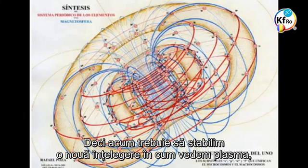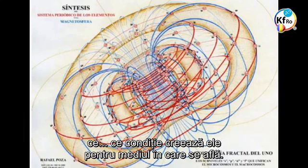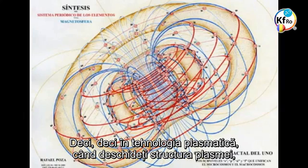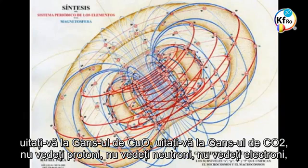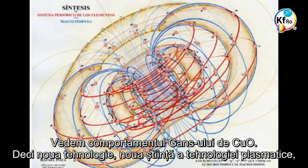Now we have to establish a new understanding of how we see a plasma, which is all about the same shape and size in respect to what they are, what they perform, what they indicate, what condition they create for the environment they are in. In plasma technology, when we open into the structure of the plasma — look at the GANS of copper oxide, look at the GANS of CO2 — you don't see number of protons, you don't see number of neutrons, you don't see electrons. But we see the behaviour of CO2.